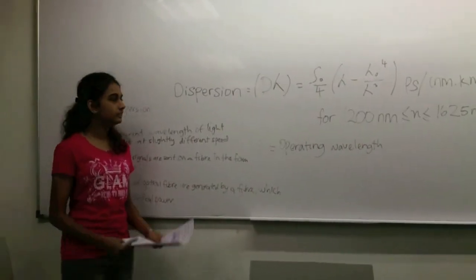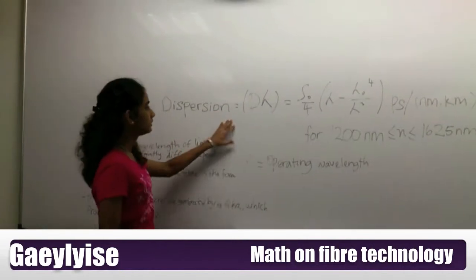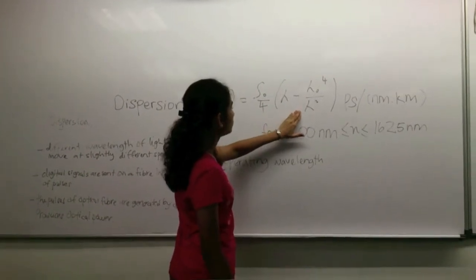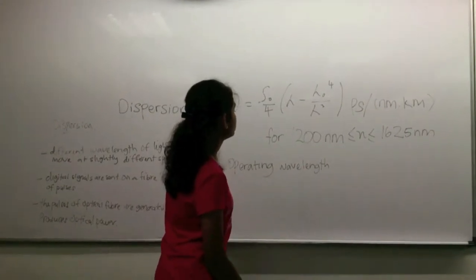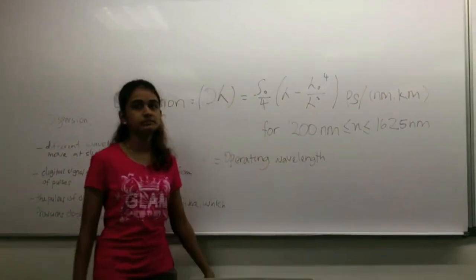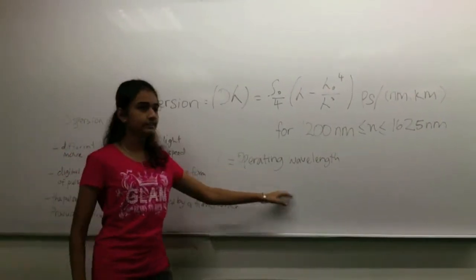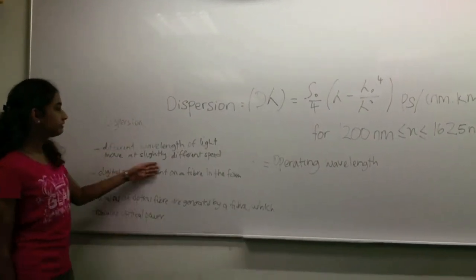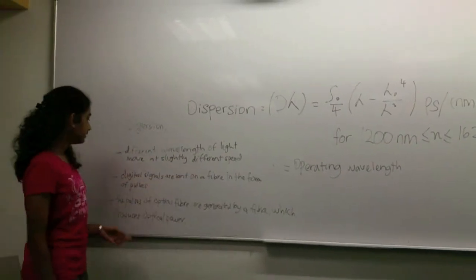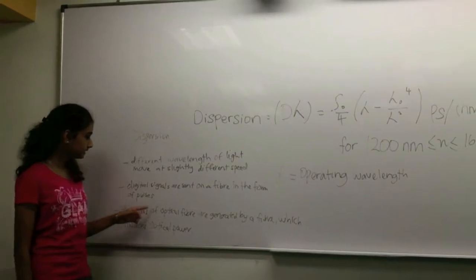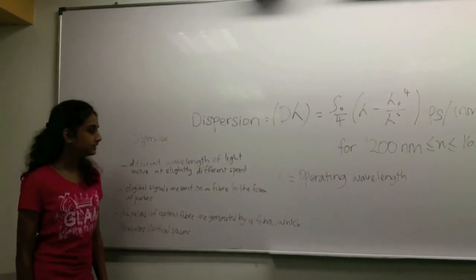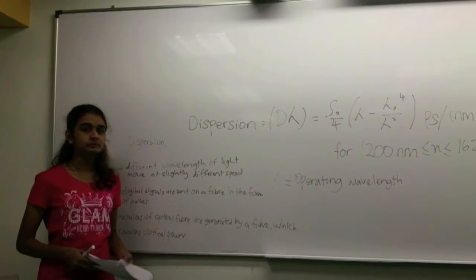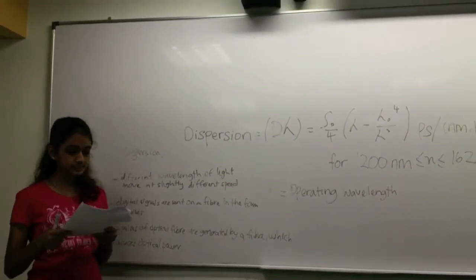Today, I am explaining about the optical fiber dispersion formula. Dispersion equals to S_0 over 4 multiplied by lambda minus lambda_0 to the power of 4 divided by lambda cubed for the range between 1,200 nanometer and 1,625 nanometer. Lambda equals to operating wavelength. This is a quick description about the dispersions. Different wavelengths of fibers have slightly different speeds. Digital signals are sent on a fiber in the form of pulses. The pulses of optical fiber are generated by the fiber which produce optical power.